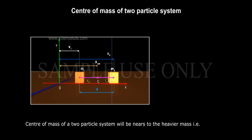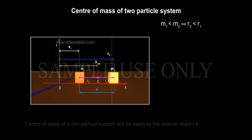Centre of mass of a two-particle system will be nearer to the heavier mass. That is, M1 less than M2 implies R2 less than R1.